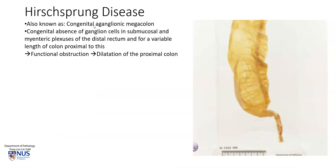Hirschsprung disease is also known as congenital aganglionic megacolon. The name actually gives you a clue as to the actual pathology — this is a congenital absence of ganglion cells in the submucosal as well as the myenteric plexuses of the distal rectum, and this can also affect a variable length of colon proximal to this.